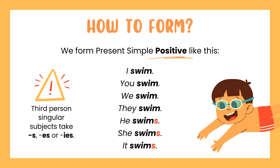How do we form present simple positive? For the third person singular, we add S, ES, or sometimes IES. If the verb ends with Y, we change it to I and add ES. For the verb 'swim': with I, you, we, and they — we use the base form: I swim, you swim, we swim, they swim. For the third person singular, we add S: he swims, she swims, it swims.